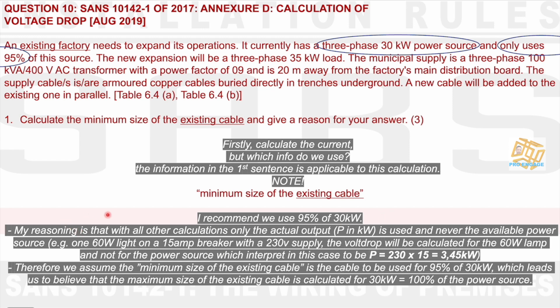Why? My reasoning is that with all other calculations, only the actual output P, you know, power in kW, is used and never the available power source. Again, for this whole supply I'm using 35 kW load. They are referring to the percentage of the full load. If I work out the amps or the power for the full load, then I would find that it is not 35 kW. But 35 kW is what is drawn from the new supply or what is expected to be drawn from the new supply. And that again also brings me to believe that it is not the power source.